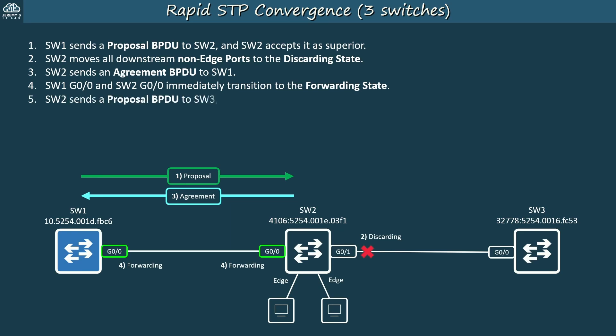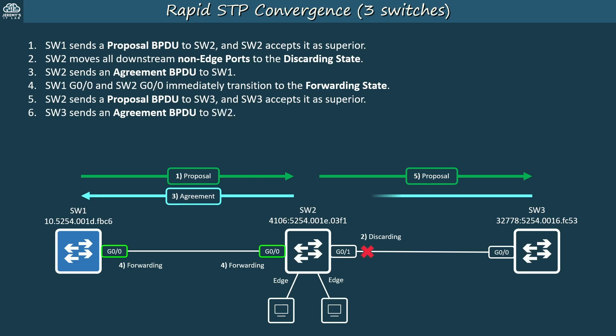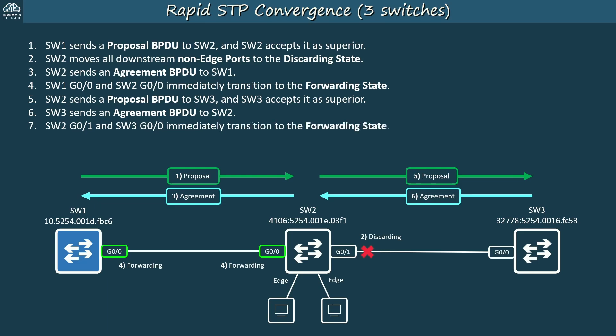SW2 and SW3 must sync as well, so SW2 sends a proposal BPDU to SW3, and SW3 accepts it as superior. SW3 sends an agreement BPDU to SW2, and then SW2 G0/1 and SW3 G0/0 immediately transition to the forwarding state — the link between SW2 and SW3 is now synced. That's a high-level look at how the sync process works; we will cover more details and scenarios in the lab video.